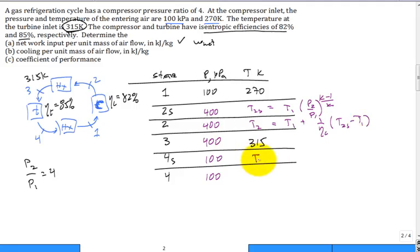How about now we jump down here to T4S? T3 times (P4 over P3), which is now 1 over 4, times (K minus 1 over K). And then T4 is equal to T3 minus (1 over the efficiency of the turbine) times (T3 minus T4S). Does that equation look okay? You like it? That's two thumbs up.